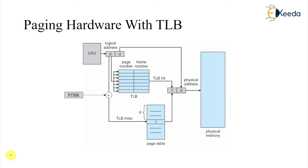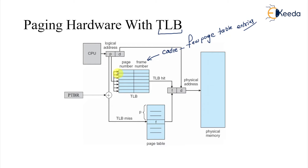This is the paging hardware with your TLB. This is the TLB — a cache memory holding a few page table entries. The idea here is: let's talk about TLB hit. If I get the physical address or frame number directly from the TLB, I will take the page number part of the logical address and search in the TLB.